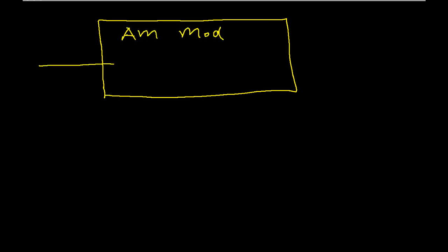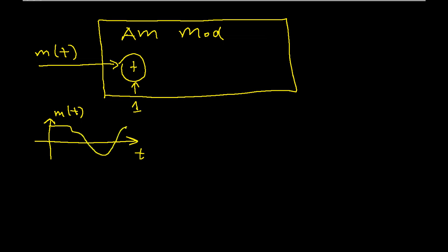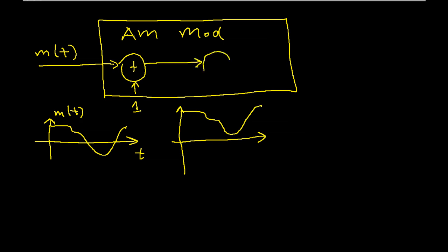Let's start with the inside of the AM modulator. We have our information signal coming in — I'll call it M of t — and we'll assume that M of t has been scaled so that its absolute value is always less than 1. The first thing that happens inside the AM modulator is that we add 1 to M of t, which makes M of t plus 1 always be positive. So if I have an M of t that looks something like this, after I add 1 it just raises it up by 1, so now it has no negative values. After we add the 1, we then multiply by cosine ωc·t, where ωc is called the carrier frequency. This product is the output of our modulator — we'll call it X of t.